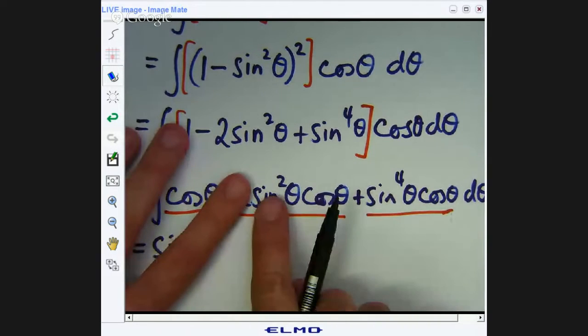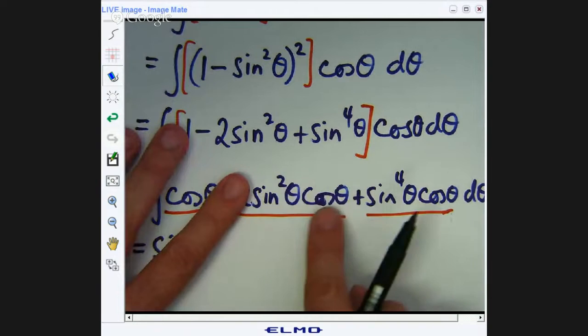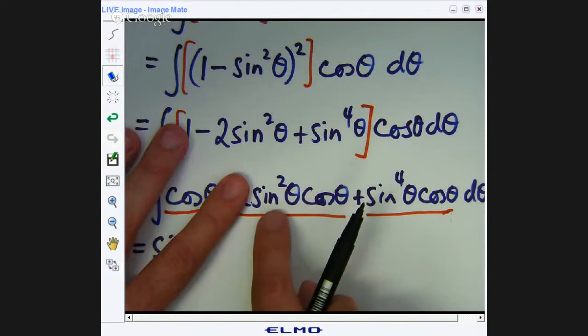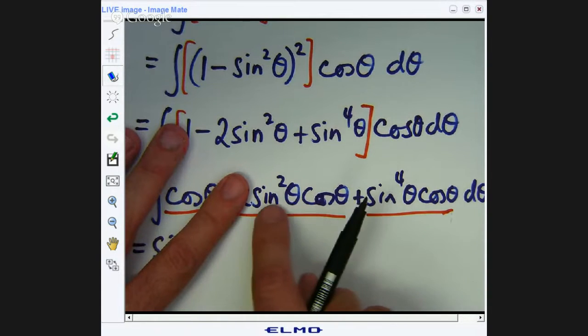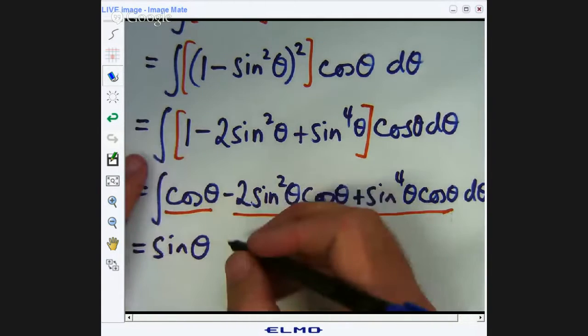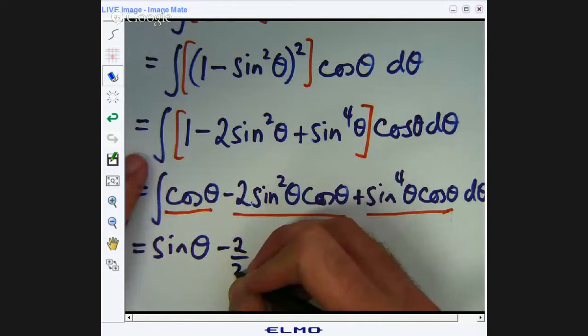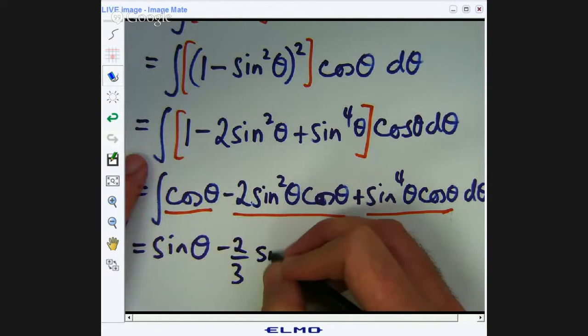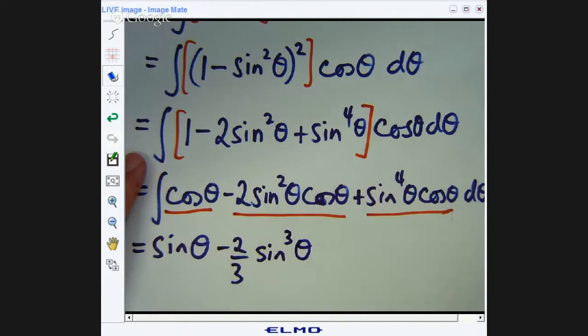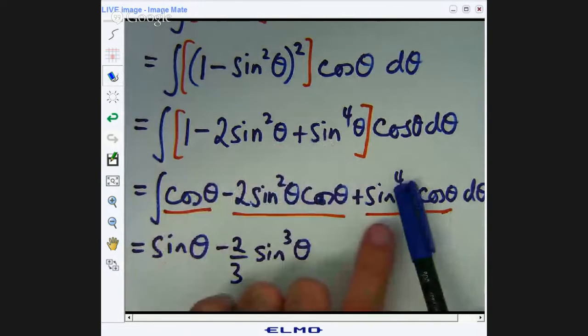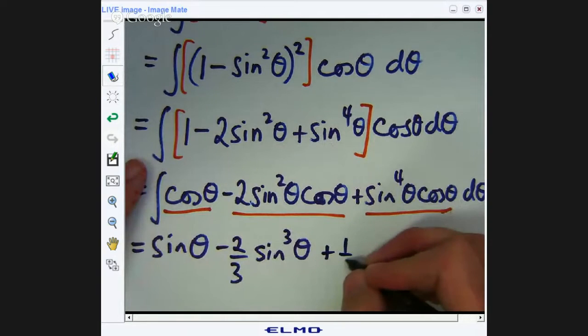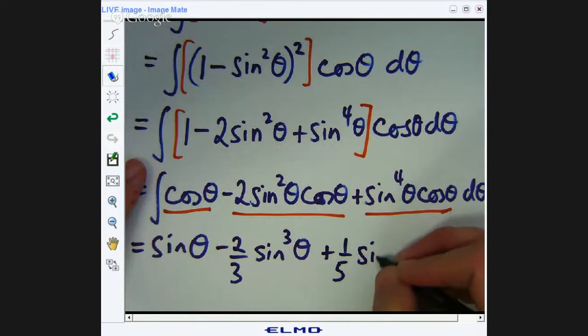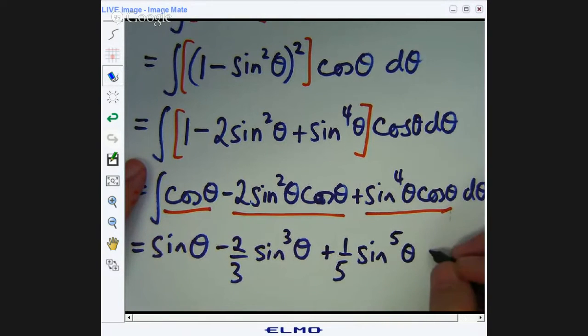Now, for this one, the integral of this, basically you increase the power of sine by one and you divide by the new power. So this will be one-third sine cubed, not forgetting the minus two. Same sort of principle over here. This will increase by one and you divide by the new power. And plus some constant of integration.